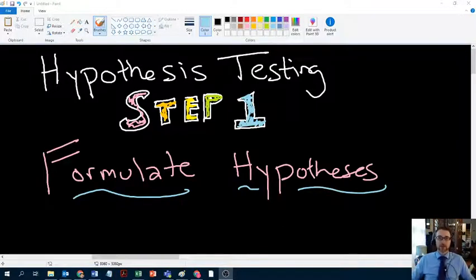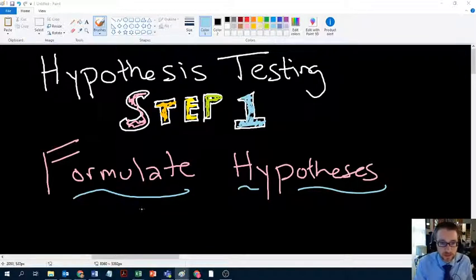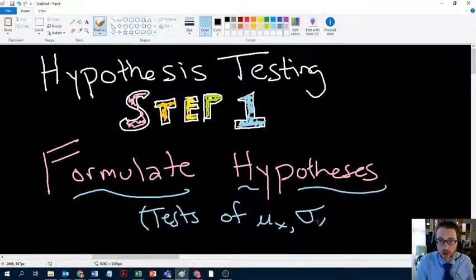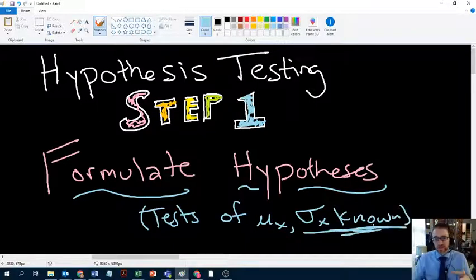Hey everybody, Dr. D here. It's good to see you again. Welcome back to our unit on hypothesis testing. Today we're going to talk about step one of the hypothesis testing process. There are five steps and we're going to start at the start. We're going to formulate hypotheses. And for the purposes of this unit, when we're just learning, we're going to look at tests of mu x, sigma x known. Although I will say that for now it doesn't actually matter whether we know sigma x or not. For step one, it's not relevant. It doesn't come into play. But let's begin at the beginning.